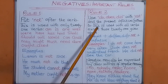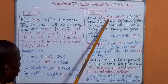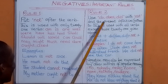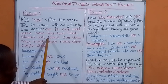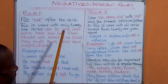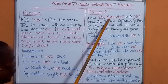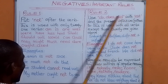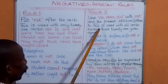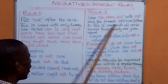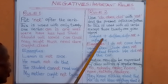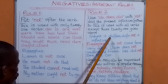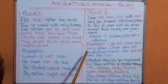Rule number two: use 'do,' 'does,' or 'did' with 'not' and the present infinitive without 'to'. This is used with all verbs except the 21 given here. So the structure is: subject, then 'do' or 'does' or 'did', then put 'not', and then the infinitive. That is how it goes.